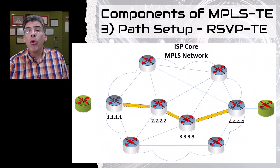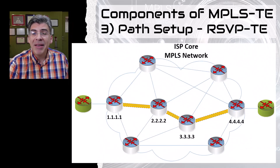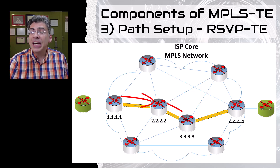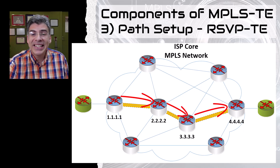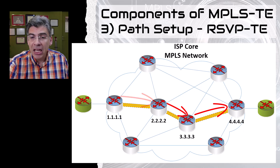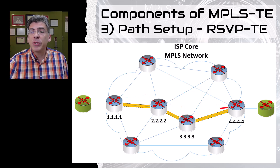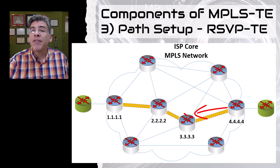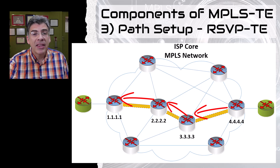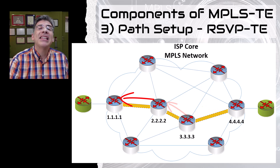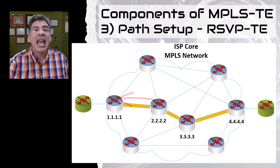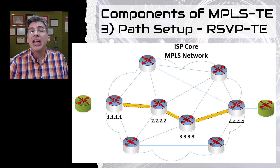Using the ordered list of IP addresses determined by the CSPF algorithm, the head-end router uses RSVP-TE to signal the tunnel. RSVP-TE is responsible for the setup and maintenance of the path, the tearing down of the path, as well as dealing with errors that may arise. We'll talk in more detail about how the RSVP-TE protocol operates in a future video.